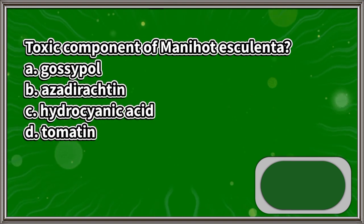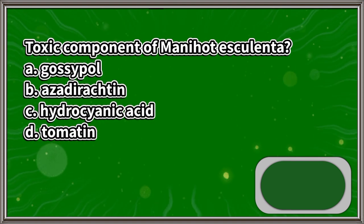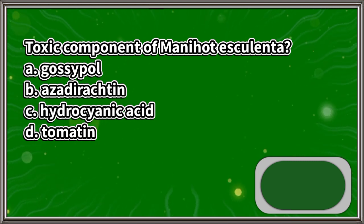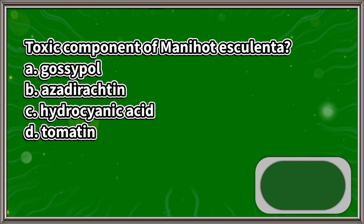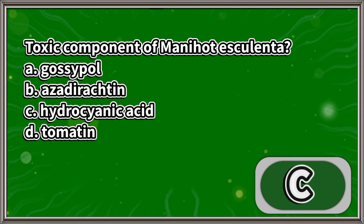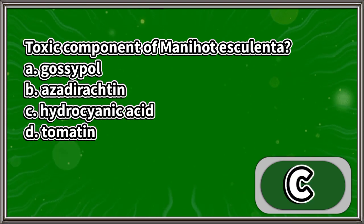The toxic component of Manihot esculenta: A. Gossypol, B. Azadirachtin, C. Hydrocyanic acid, D. Tomatine. The answer is letter C.